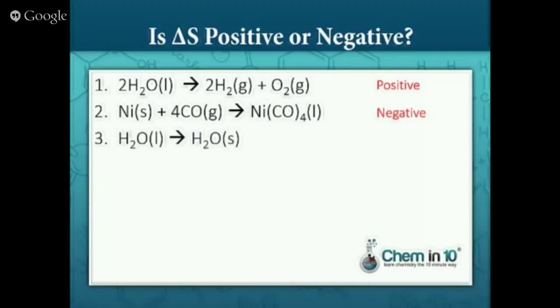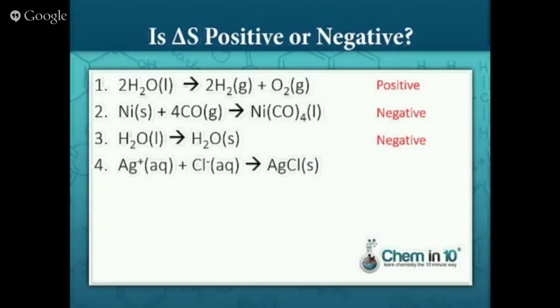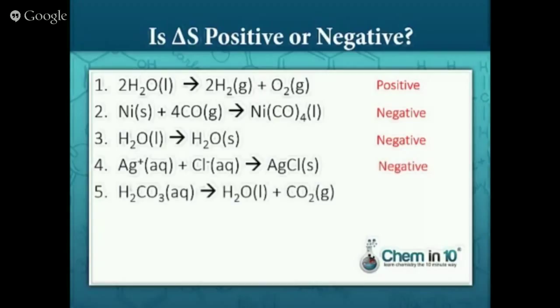Going from liquid water to solid water — we're freezing water — entropy has to be decreasing because we're going from liquid to solid, so entropy is negative. Here we have silver ion plus chloride ion coming together to form the precipitate solid silver chloride. Since we're having two particles come together into a solid, entropy is negative. Carbonic acid becoming water and carbon dioxide: one compound is becoming two compounds, and one of those is a gas, so entropy change is positive.